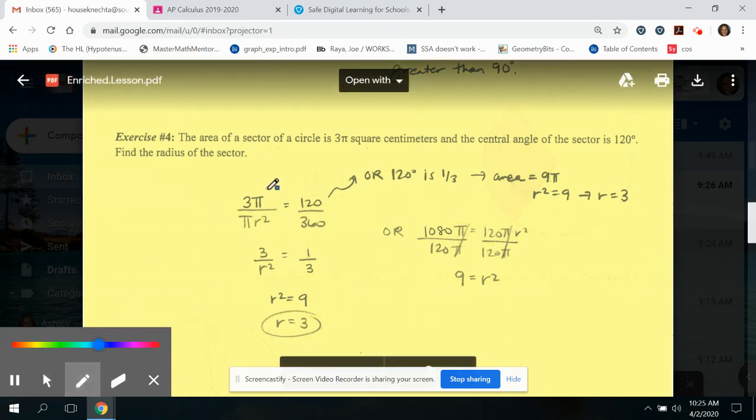A couple of cool algebraic tricks you could do. You could cancel the pi's. So that's how I got 3 over r squared. You could reduce this to one third or you could leave it alone. Either way, you cross multiply, r squared ends up being nine. The square root of that is three. I also wrote that over here if you didn't reduce the 120 out of 360.